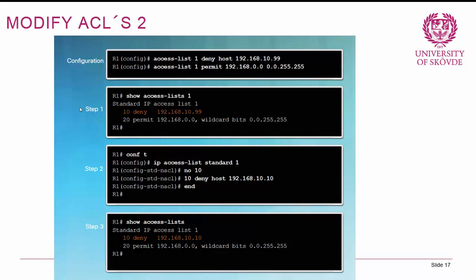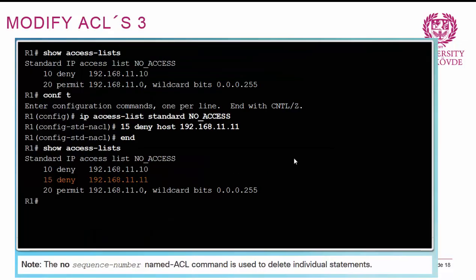Using sequence numbers, you can enter configuration mode with 'ip access-list standard' or 'extended' and the number, then remove an individual statement with 'no 10', or add a numbered rule by typing the sequence number before the statement. To insert a rule between 10 and 20, type '15' followed by the rule. The new rule will appear in the ACL as number 15.